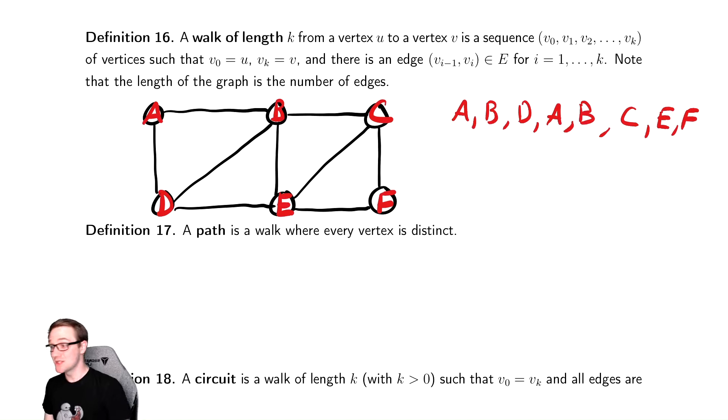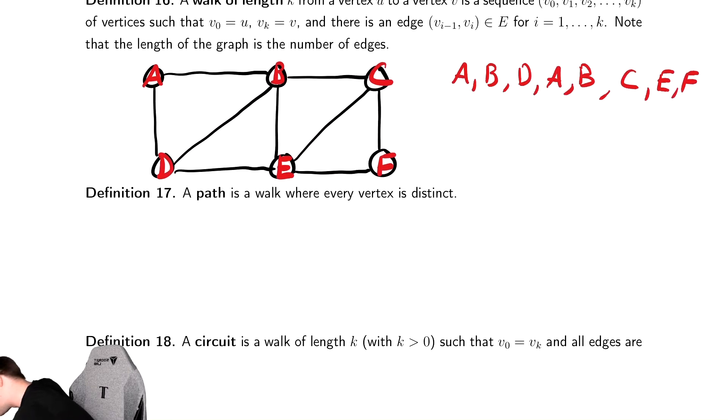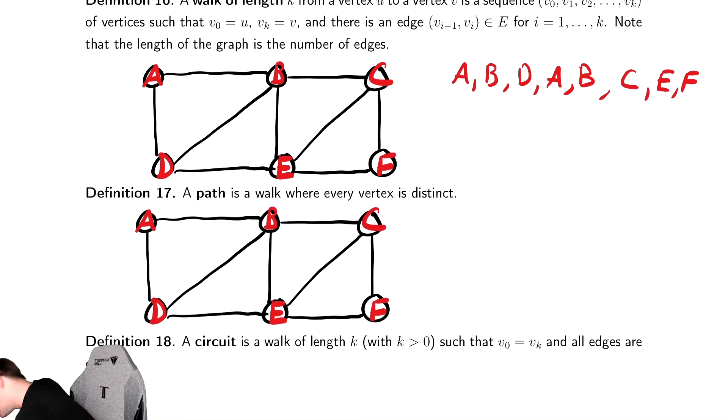A path is one where you can't repeat vertices. So I'll give you an example of a path in this same graph. So we're going to paste that same graph again. An example of a path might be, we'll do this in blue to emphasize it. It is A, B, D, E, C, and F. That is a valid path.